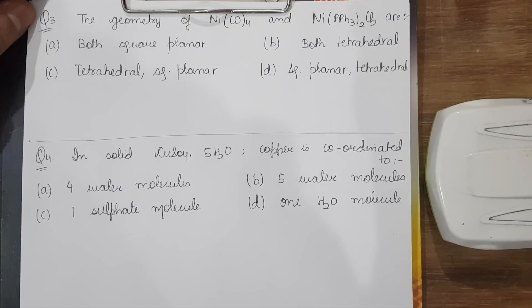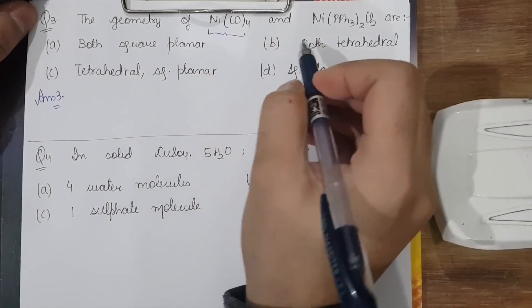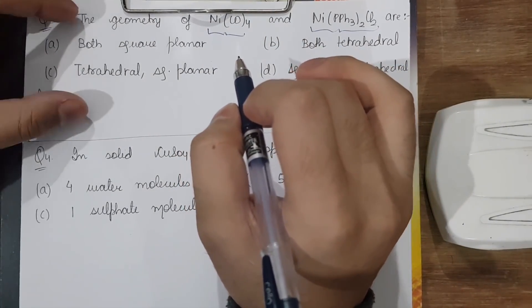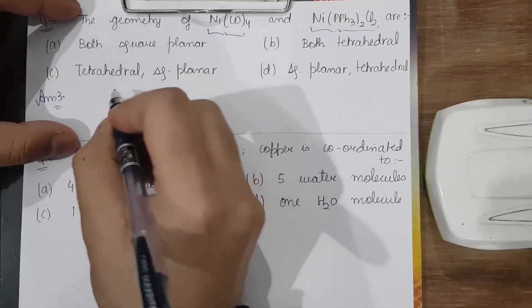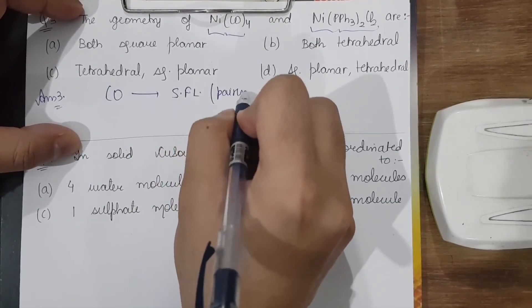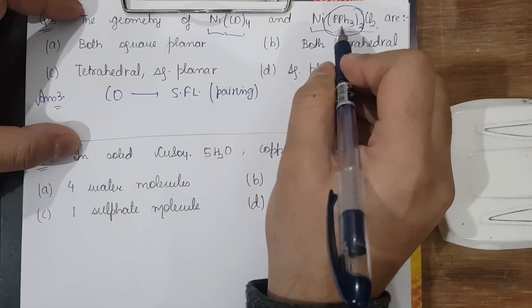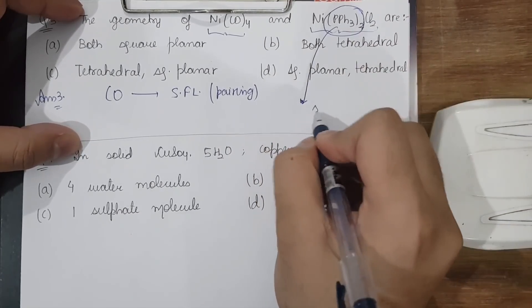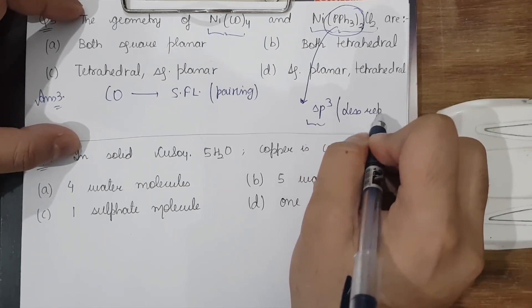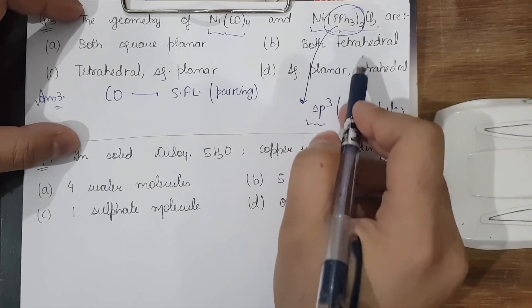The next important question asks us to find the geometry of Ni(CO)₄ and Ni(PPh₃)₂Cl₂. We should know that the carbonyl group is a strong-field ligand which causes pairing. Also, whenever we have bulky groups like PPh₃, they always prefer sp³ hybridization because it gives less repulsion — the compound becomes non-planar.